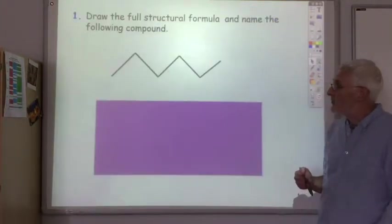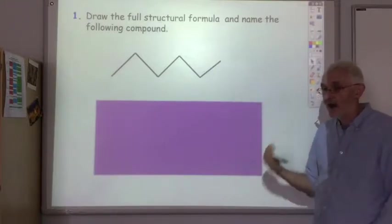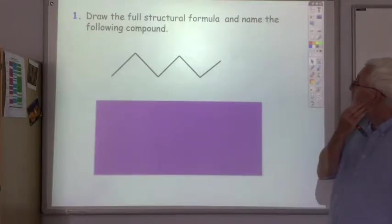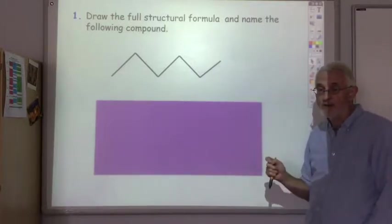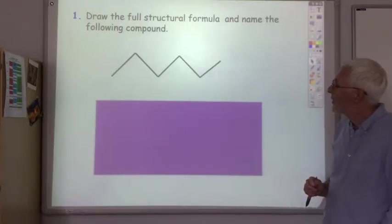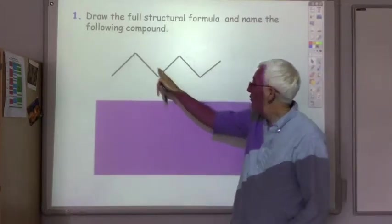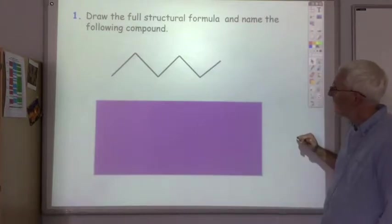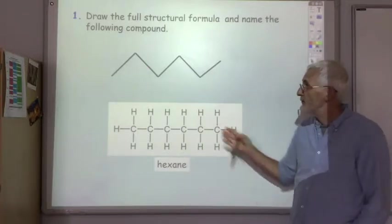I'd like you to pause the lecture after reading the question, try to answer it, and then I will reveal the answer. Draw the full structural formula and name the following compound. We've got one, two, three, four, five, six carbons in this molecule. So we've got hexane, and there's its full structural formula.